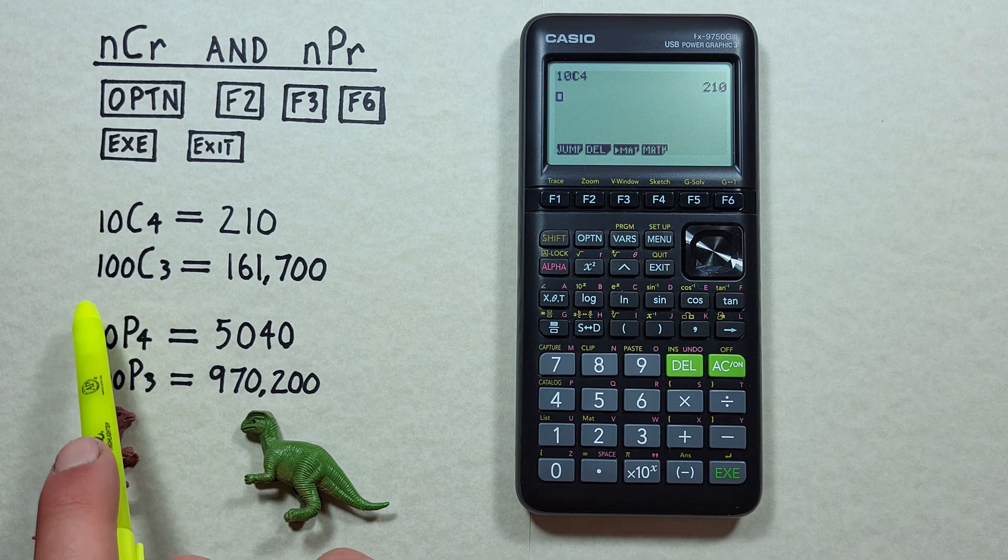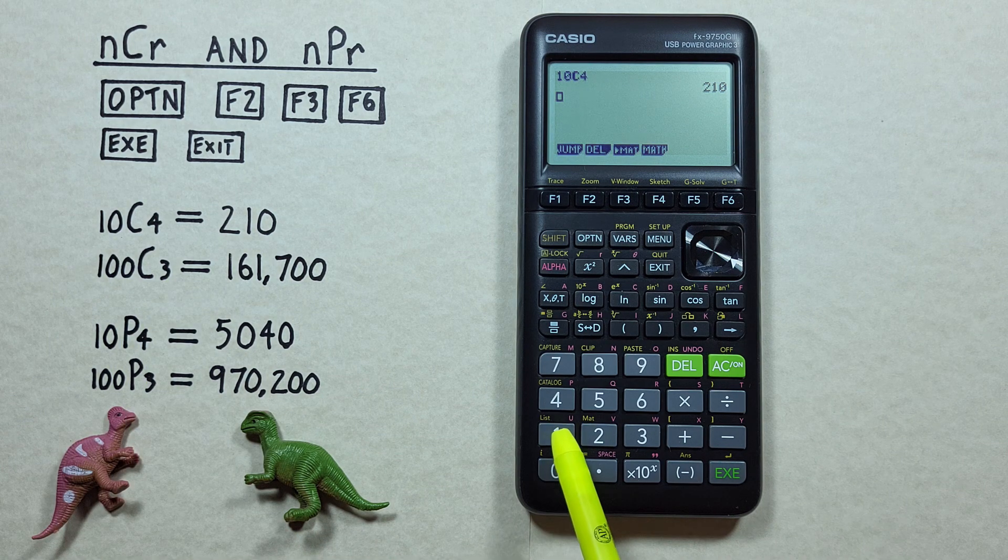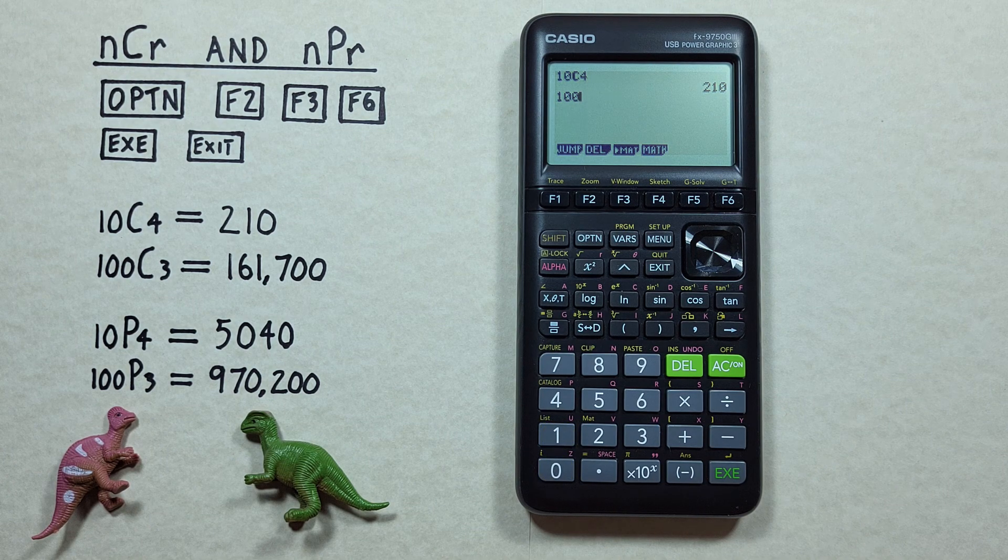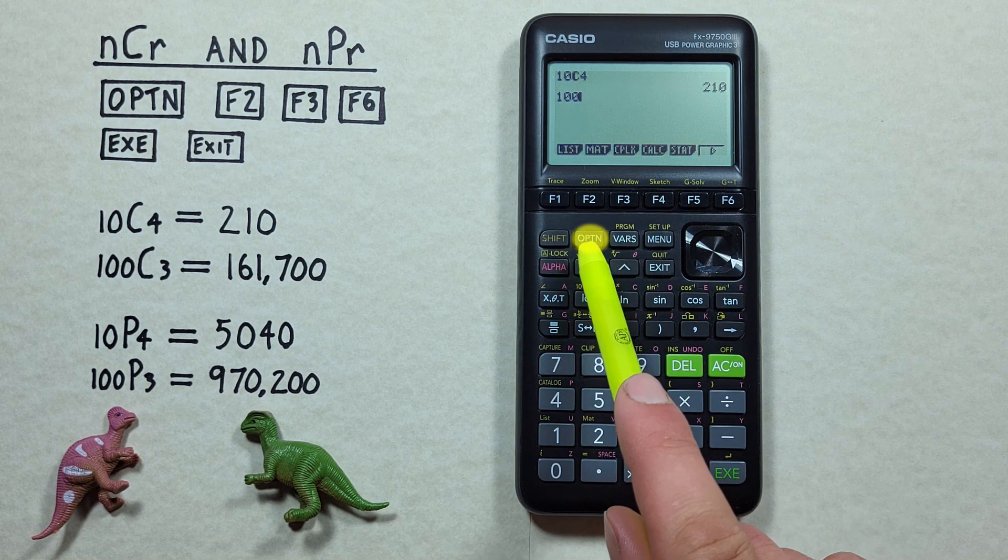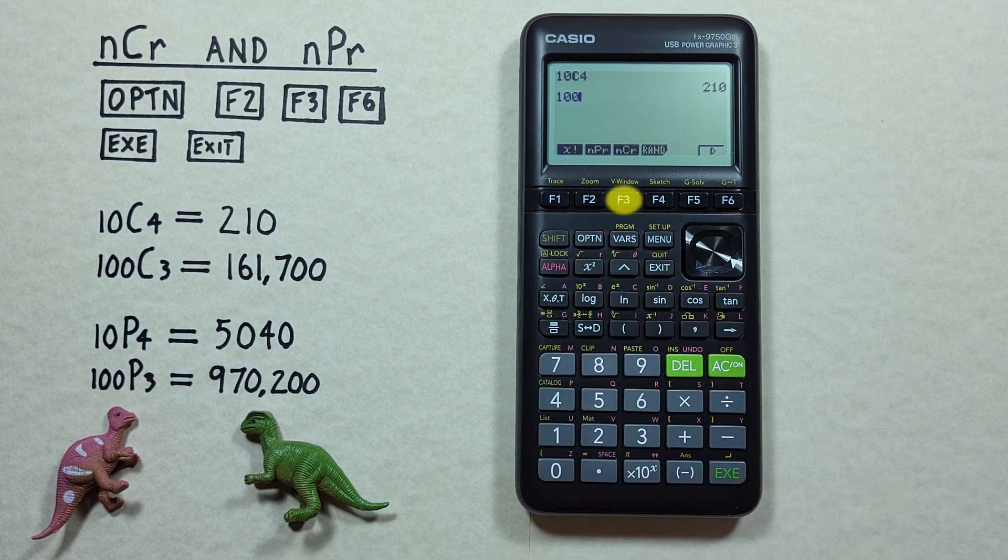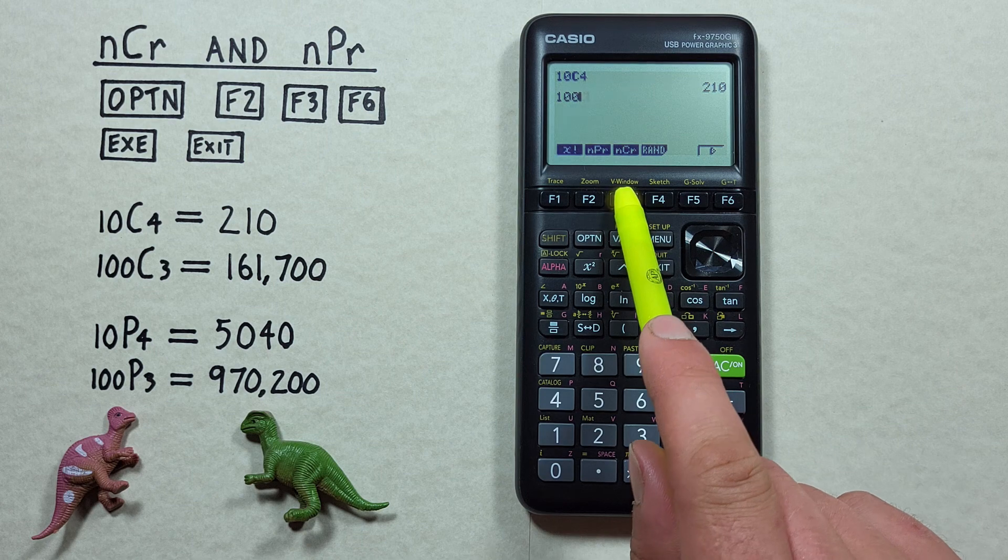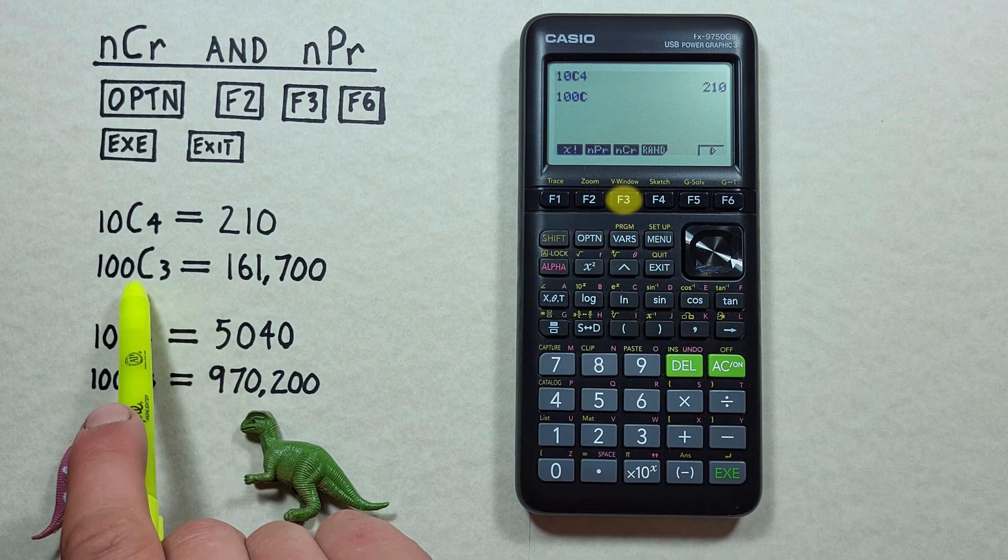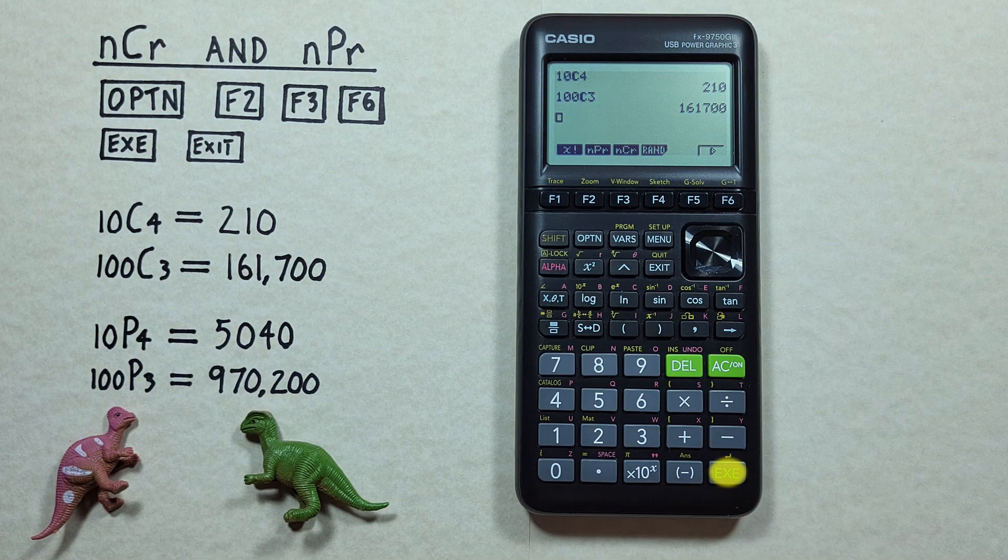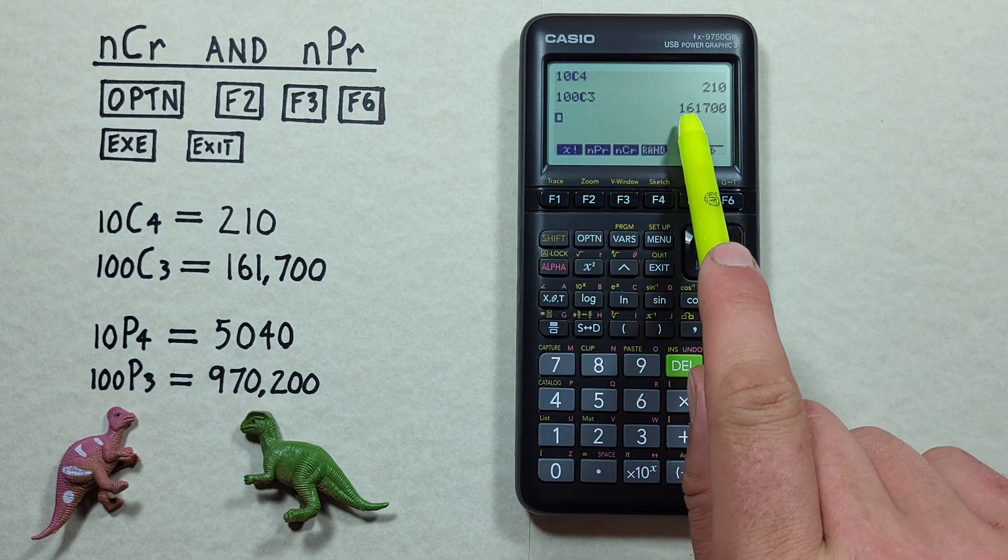Let's look at a second example. Let's say we had 100 objects and wanted to choose 3. Again, we start by entering the 100 on our screen, and then we want to go to our probability menu. So again, we press Option, and then the F6, F3 for probability, and F3 again for the NCR or combinations. And we were choosing 3 objects, so we hit the 3, and hit the EXE, and we see 100 choose 3 combinations is equal to 161,700.